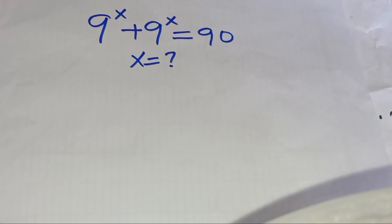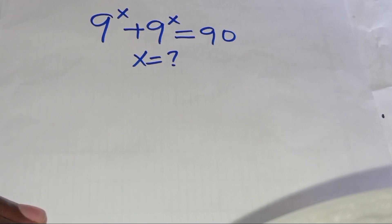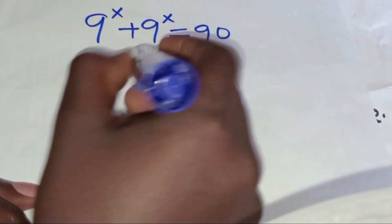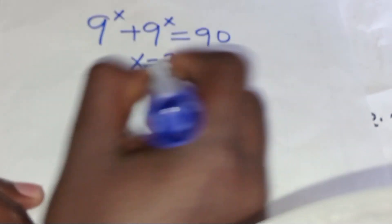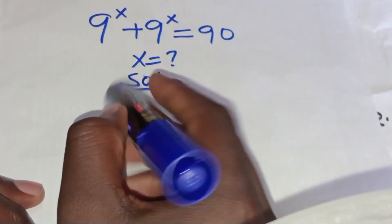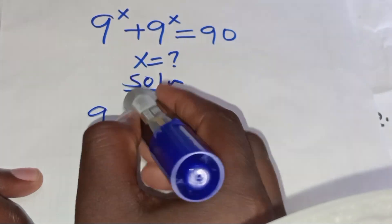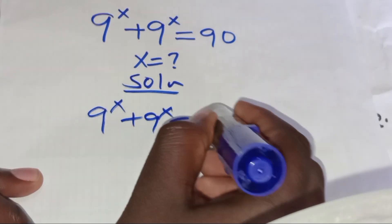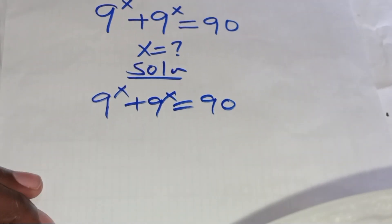Hello everyone, welcome. The problem is the following exponential equation: 9 to the power x plus 9 to the power x is equal to 90. We need to find the value of x.